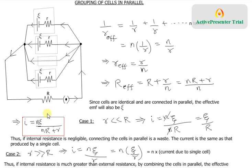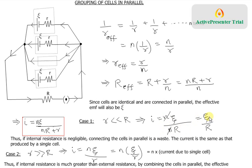Now we explore two cases. Case 1: the internal resistance r is negligible compared to the external resistance R. In the denominator we can neglect r, so we get n·η / (n·R), and n cancels out, giving I = η/R.